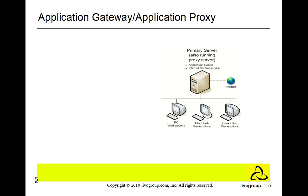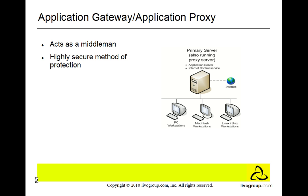Application gateway, also known as proxies, acts as a middleman. The application gateway is the only machine that talks to the outside world, ensuring no computer has direct access to internal computers. It is a highly secure method of protection. However, it requires large memory and processor resources. Proxies are considered second generation firewalls.